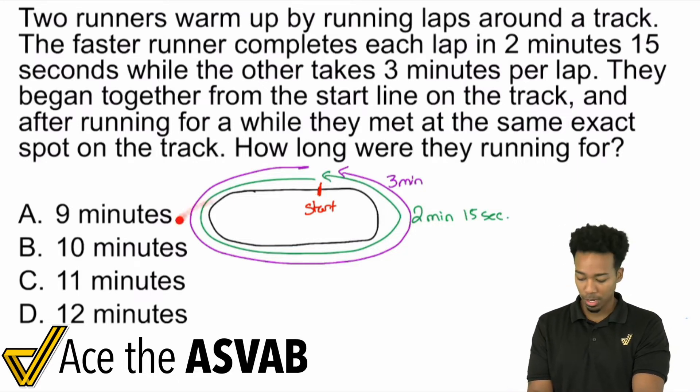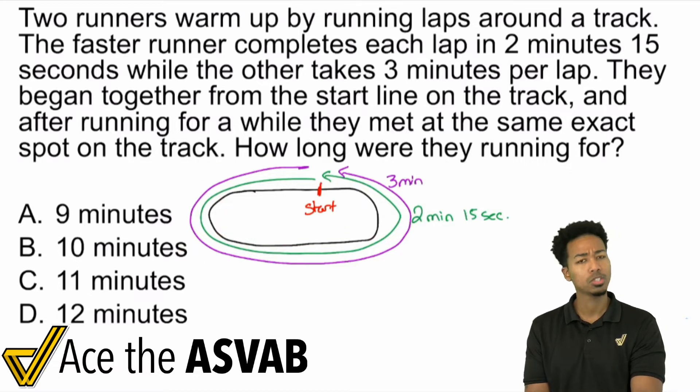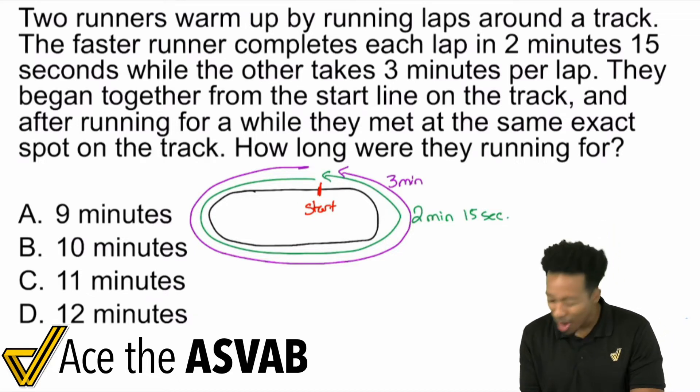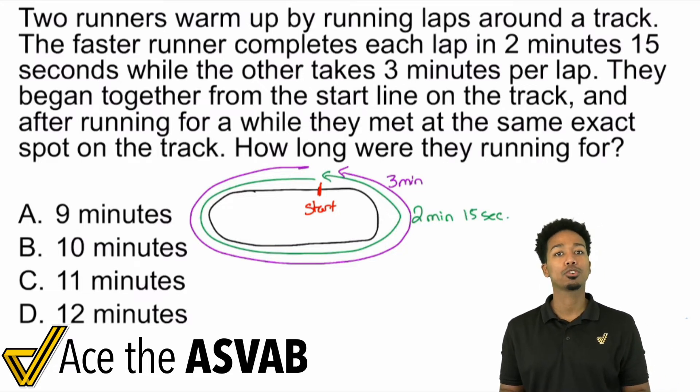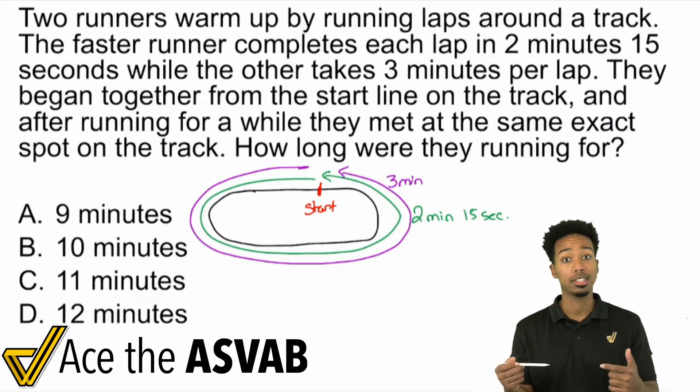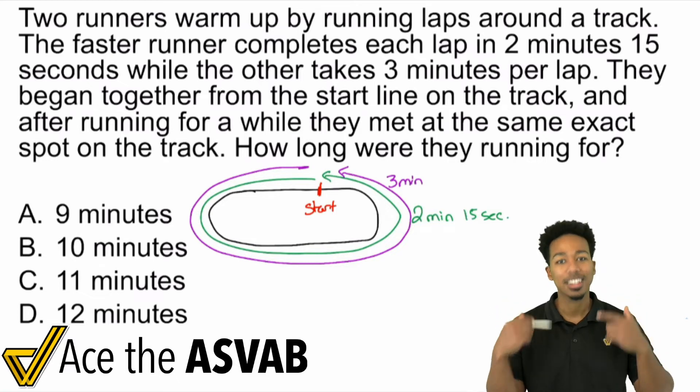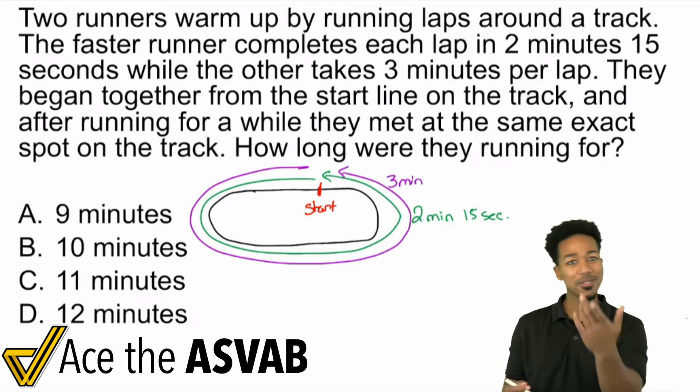They start from the same spot. This person takes two minutes 15 seconds to run each lap. This person takes three minutes. So think about what will happen after their first lap. This person is still catching up. They're slower. So we're trying to figure out after how many minutes, when are they going to be at the same exact spot at the same exact time at the start line? When is that going to happen again? And so this is a prime example of least common multiple, because you're trying to figure out how many times each of these are going to go and end up at the same place. How soon will they end up at the same spot again? That's the least common multiple. And if you don't believe me, watch this. This is how we're going to get the answer.